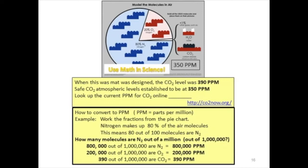Moving back to looking at the numbers — parts per million. When this math was produced, the CO2 level was 390 parts per million. Safe CO2 levels have been established internationally as being 350 parts per million. And if you go online right now, it turns out the current parts per million for CO2 — are you ready to guess? — it's 399 parts per million. It's really a good point to acquaint kids with these numbers and see what amounts of carbon dioxide are in the air and how we measure them.